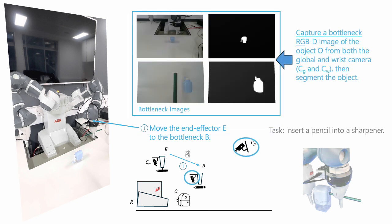At this pose, we capture an RGBD image from both cameras and then segment the object. We use the global camera because the waist camera may not always capture the object in its initial frame.